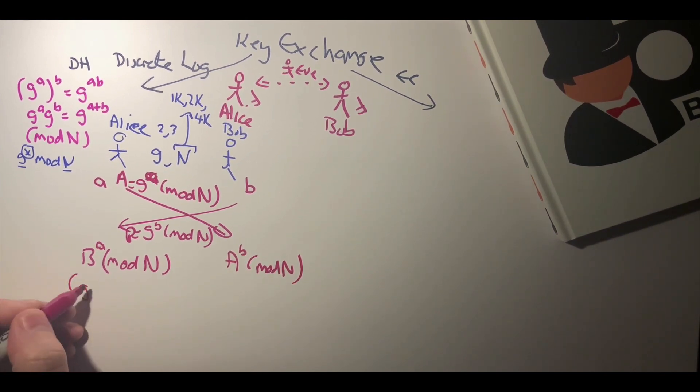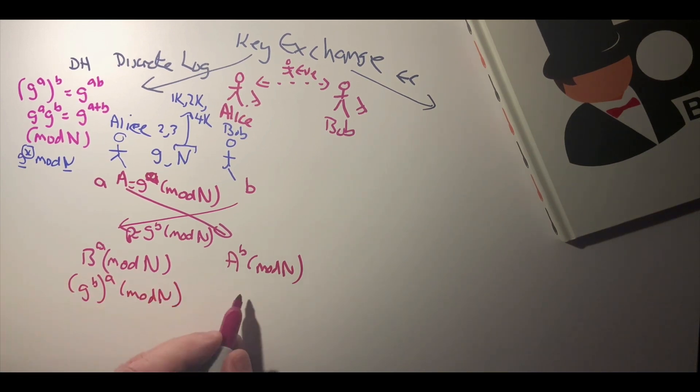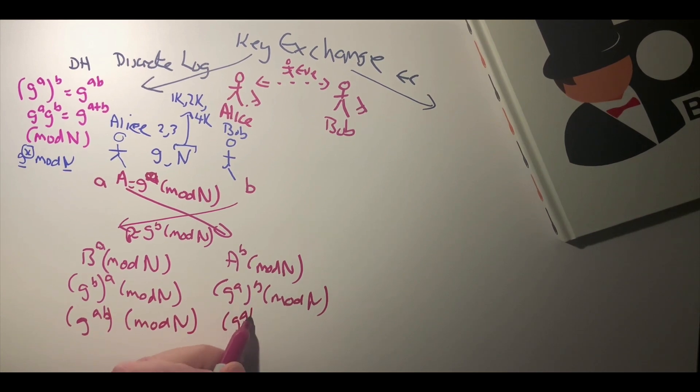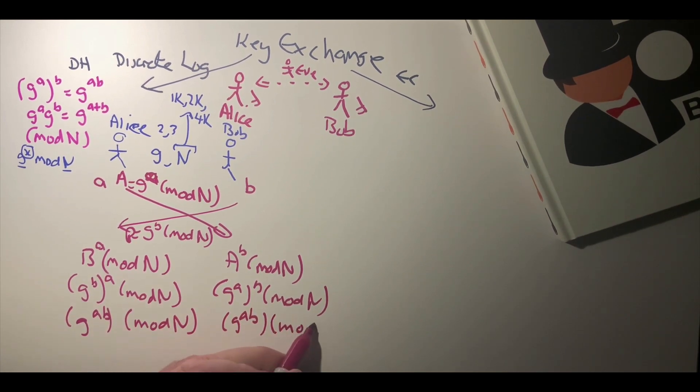Now this is g to the power of b raised to a, which is g to the power of ab. So we end up with g to the power of ab mod n on both sides, and the values will be the same on either side.